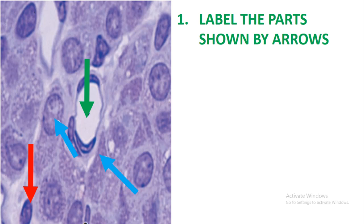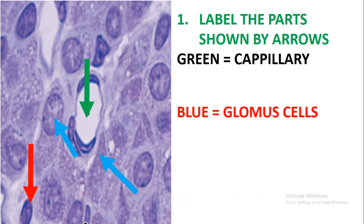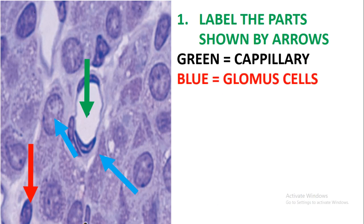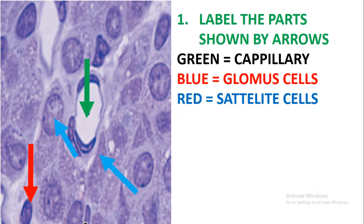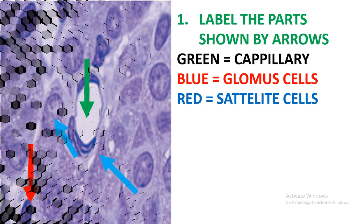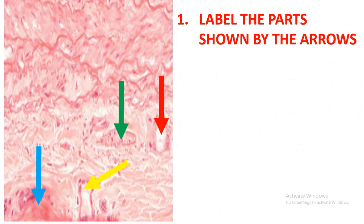Label the parts shown by the arrows on this slide. Green is pointing at the capillary, blue is pointing at the juxtaglomerular cells, and red is pointing at the satellite cells.